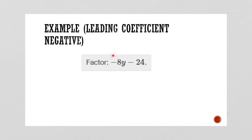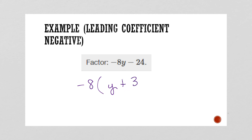When your leading coefficient is negative, you have to factor out a negative — that's crucial for what we're going to be doing next. For negative 8y − 24: the biggest factor of 8 is 8, and I can pull 8 out of 24 evenly. They don't both have y's, so y is not in the GCF. Factoring out negative 8: what times negative 8 gives negative 8y? Positive y. What times negative 8 gives negative 24? Positive 3. So the answer is negative 8(y + 3).